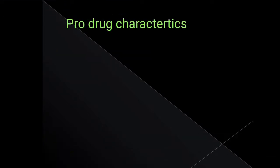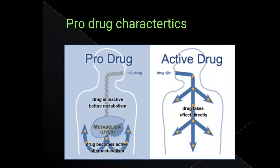Next question on prodrug characteristics — this is an AKU past paper question. A prodrug is in inactive form before metabolism, and the drug becomes active after metabolism. In contrast, active drugs are already active and do not require any metabolism for activation, as you can see in the picture.